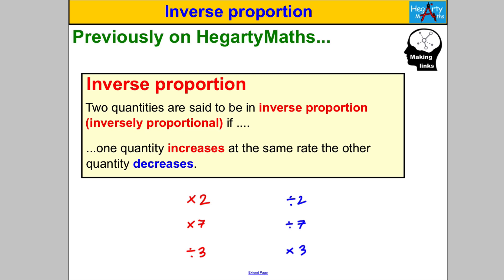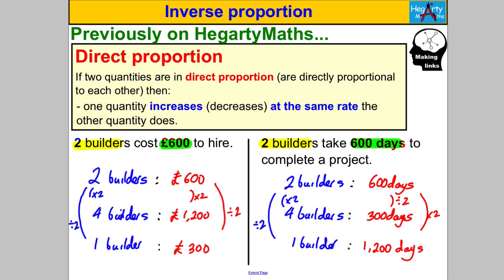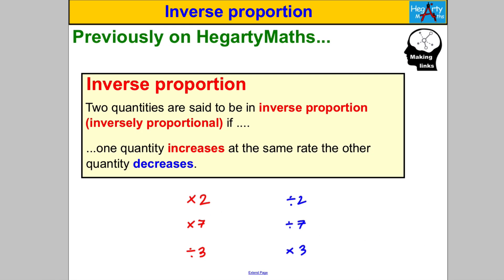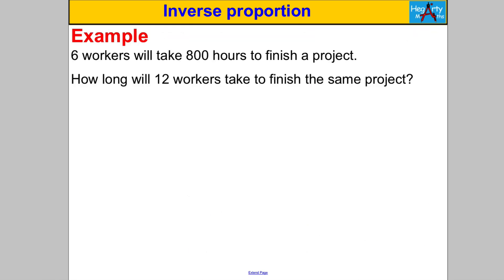Now, just before we do some examples, how are you going to know whether it's direct or inverse proportion? Well, the truth is you've just got to read the question super carefully and use your common sense and logic. Obviously, if you increase your number of builders, you decrease your time for the project because you've got more people doing the job. So think really clearly about which is which. All of these are going to be inverse proportion — let's do some questions, pause the video and have a go.